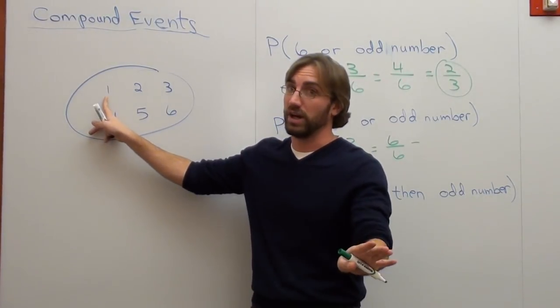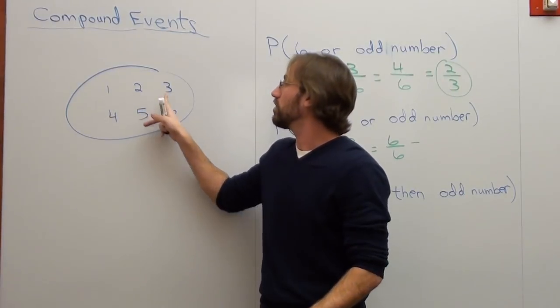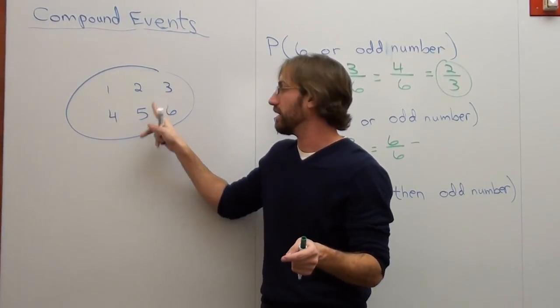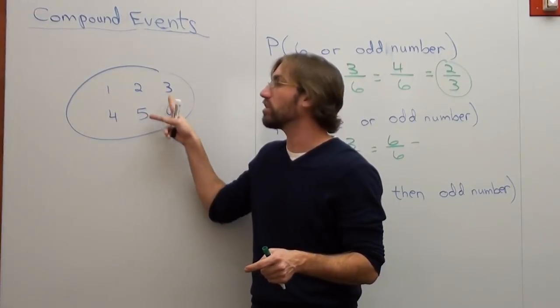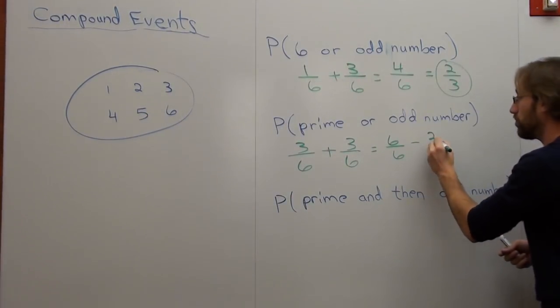Well, let's see what's prime and odd. 1 is neither prime nor odd. I'm sorry. It's not prime, but it's odd. 3 is prime and odd. And 5 is prime and odd. These are the only two numbers that are both prime and odd. So what I have to do is I have to subtract 2 out of 6.